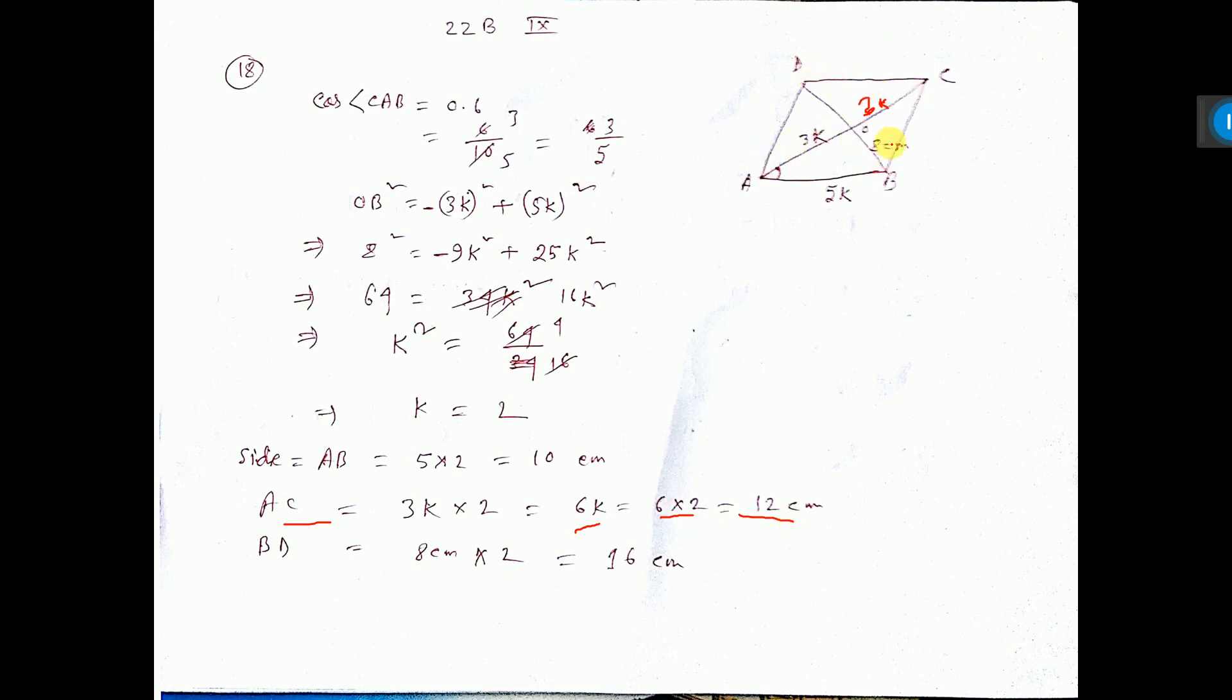And BD length, this is 8. Given in the question, this is also 8, because diagonals bisect each other, that is 16 cm. In the question it is told find diagonals. So AC and BD are the diagonals we have calculated.